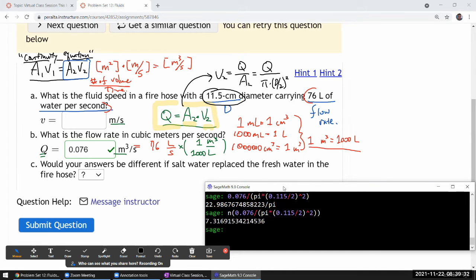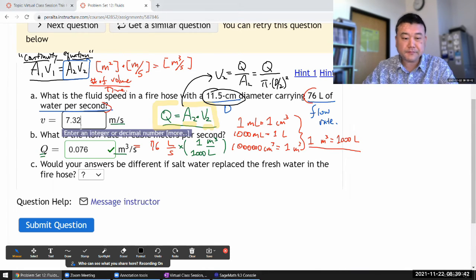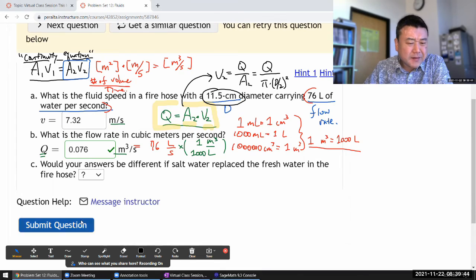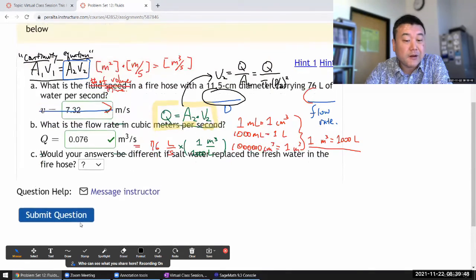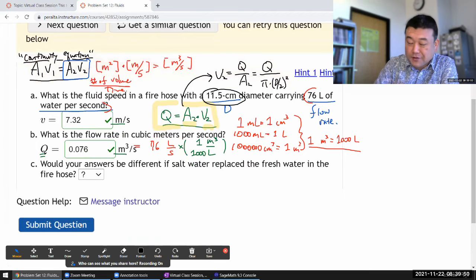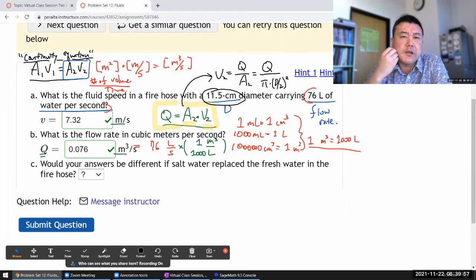I don't really have a good sense of feeling for whether that's a fast fluid speed or slow fluid speed, but that's the numerical answer. I guess it's faster than someone who's walking but not faster than someone who's running.